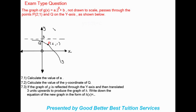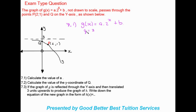We write the equation as g(x) equals a times 2 to the power of x plus b. We identified that the asymptote, which they call b in this question, equals 3. So the equation becomes y equals a times 2 to the power of x plus 3. Now we substitute in the coordinates of point P, which are x equals 2 and y equals 1.